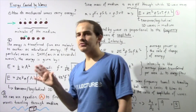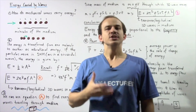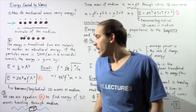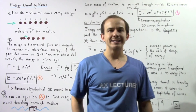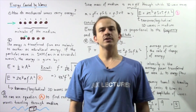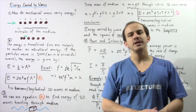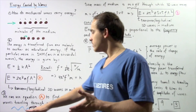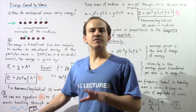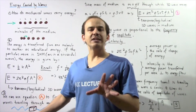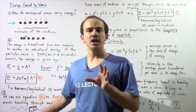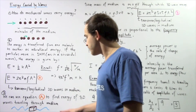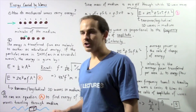Equation A gives us energy for two-dimensional mechanical waves. What about three-dimensional mechanical waves? We can use equation A to find the energy for three-dimensional mechanical waves propagating through a certain medium. Let's suppose we have a three-dimensional wave as shown by the blue region, propagating through a medium, and we take a small volumetric section of the medium through which the wave is traveling.